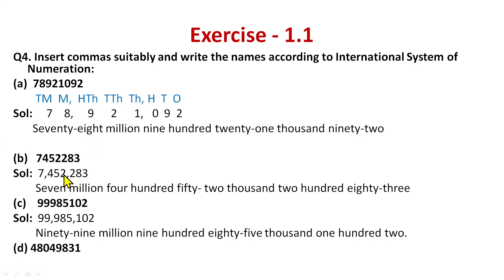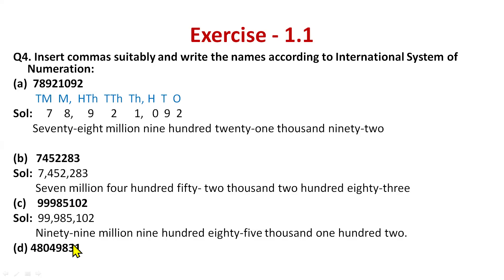Part (b): insert commas after three digits then three digits — ones period, thousands period, millions period — and write: 7 million, 4 hundred 52 thousand, 2 hundred 83. Part (c): insert commas after three digits — 99 million, 9 hundred 85 thousand, 1 hundred 2. Remember: write the period name in place of the comma. For Indian system it's three then two-two; for international it's three-three. Now do part (d), solve it and write your answer in the comment section.